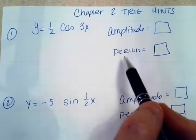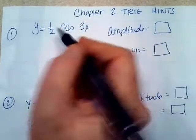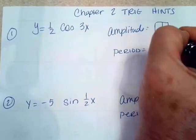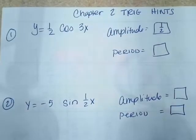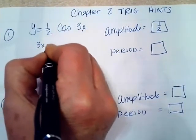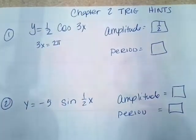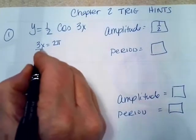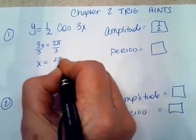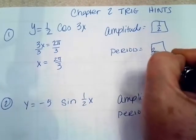You're going to have several questions that ask you for amplitude and period. Remember the amplitude is the coefficient of your trig function, so this amplitude is 1/2. And to find the period, you take this angle of 3x and you set it equal to 2π, and then you solve for x. So this is going to be 2π/3 for the period.